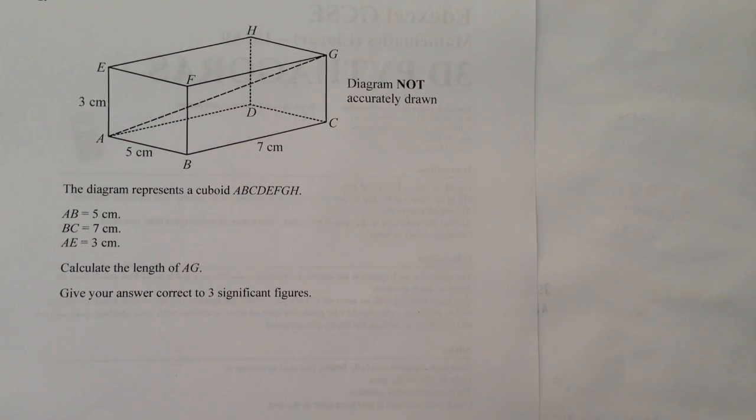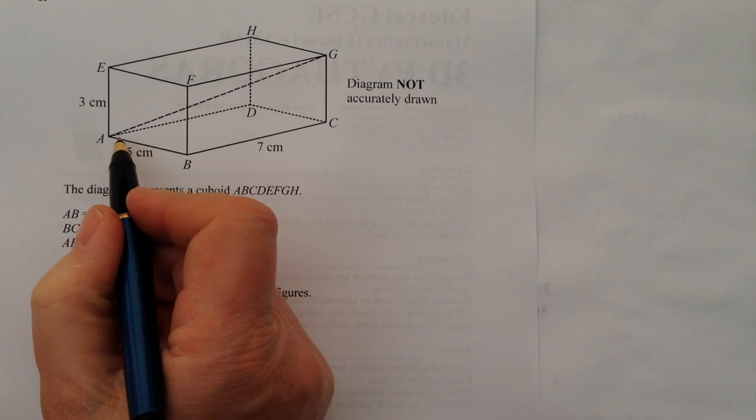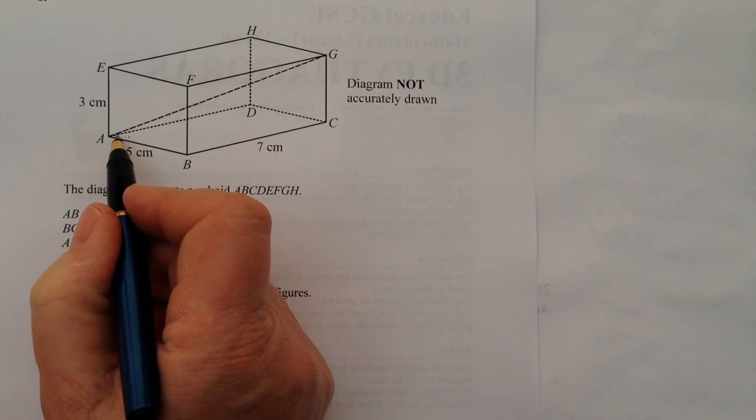Now if you have a look at the cheat sheet, it will give you a few pointers. What I'm basically suggesting is that with these types of questions, you're going to be dealing with Pythagoras twice because what it's asking us to do is to work out AG.